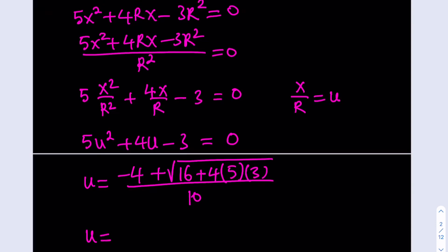u is going to be negative 4 plus the square root of, well 4 times 5 times 3 is 60 plus 16 is 76.